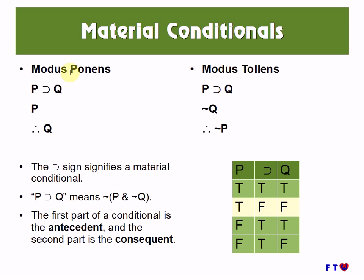Now we move on to material conditionals. Note that the use of the term 'material' here — we are not talking strictly about conditionals, but a specific kind of conditional used in logic. We have two rules concerning material conditionals: modus ponens, which is Latin for 'motive affirming,' and modus tollens, which is Latin for 'motive denying.' In modus ponens we affirm the antecedent — the first part of a conditional is called the antecedent, and the second part is the consequent. So here P is the antecedent and Q is the consequent.